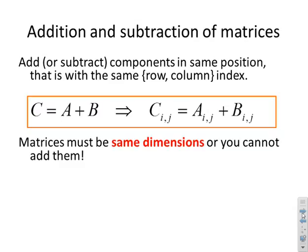Addition and subtraction of matrices: you add or subtract components in the same position. If I write matrix C equals matrix A plus matrix B, that's the same as C_ij = A_ij + B_ij. The matrices have to have the same dimensions because we're doing it for every position in the matrix.